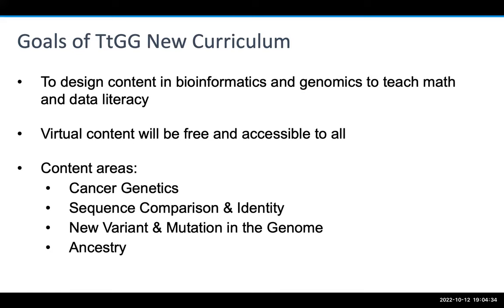The TTGG team has been very busy designing new lessons and content on bioinformatics and genomics, and overall the goal of this content is to emphasize and teach math and data literacy. This is all going to be virtual, so it'll be free and accessible for anybody who wants to use it. We are creating content in four new areas — cancer genetics, sequence comparison and identity, the origin of new variation and mutation in the genome, and ancestry — each of which will become a module and be the topic of future webinars this year.